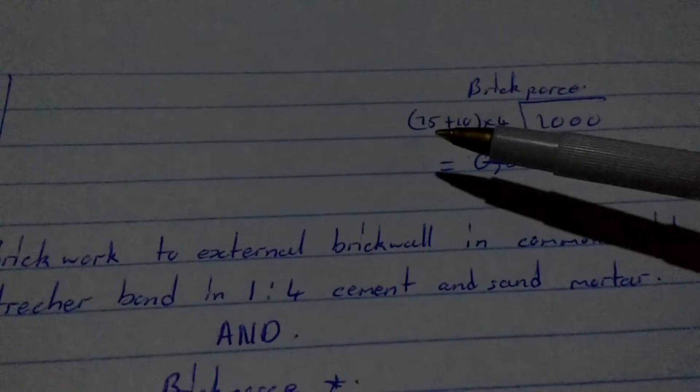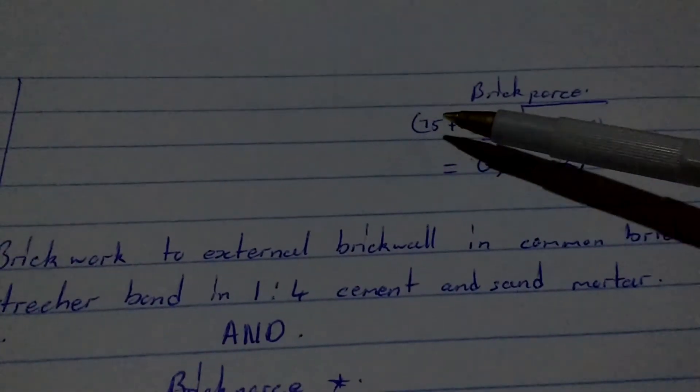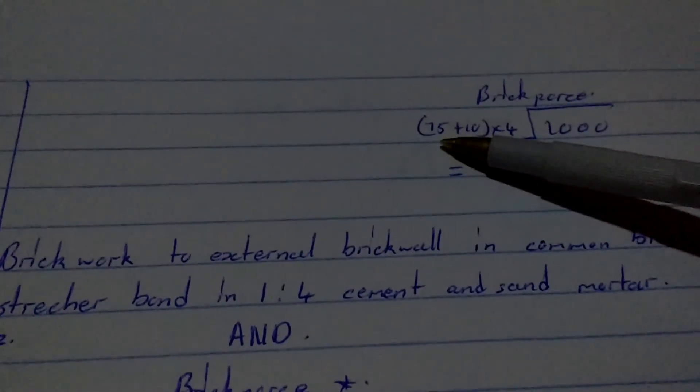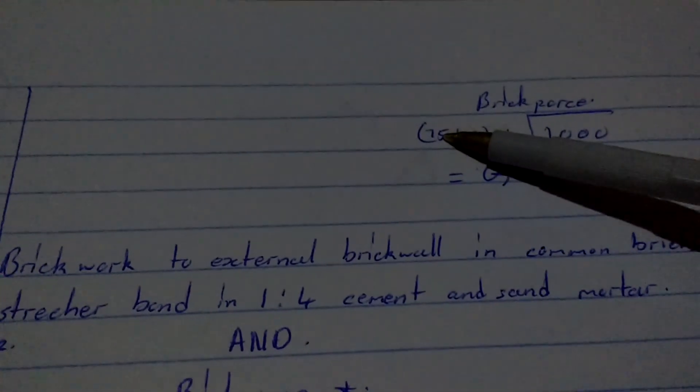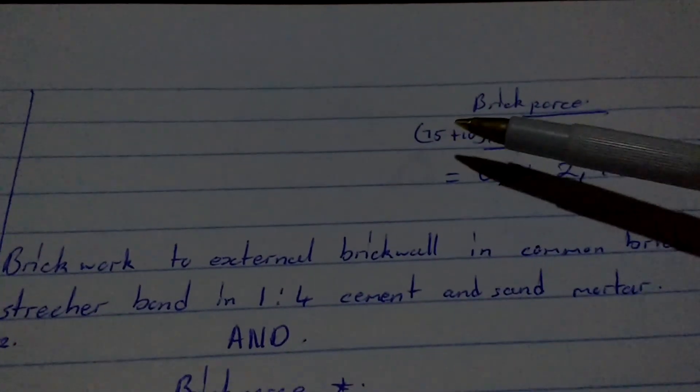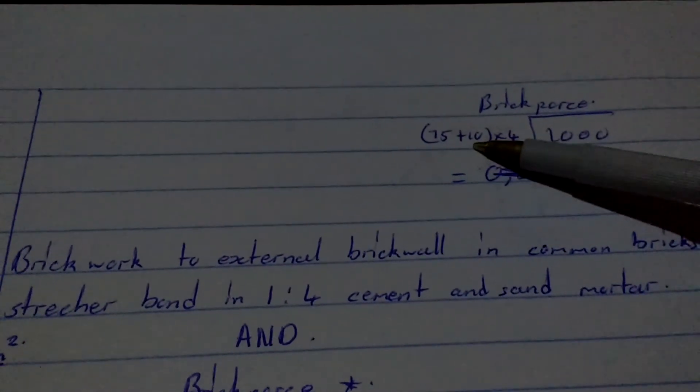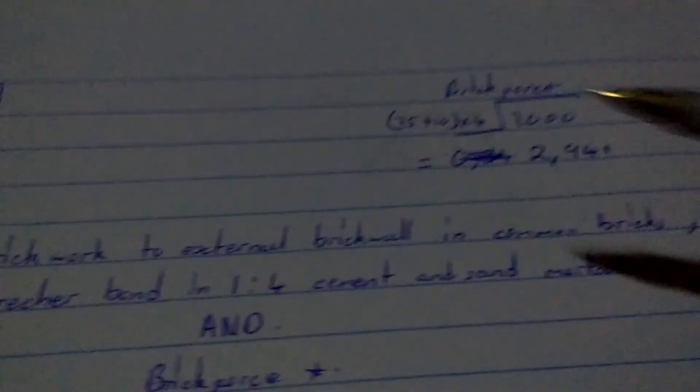And then, so our course height, we're going to calculate the course height for one course. That would be 75, that's the height of a common brick, and then plus 10, that's the thickness of the mortar.